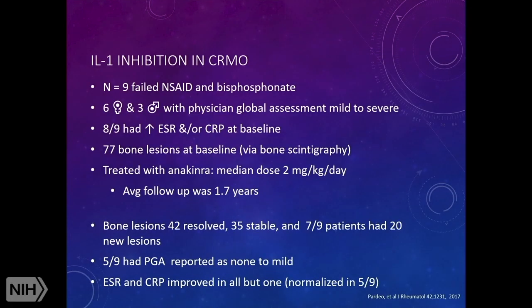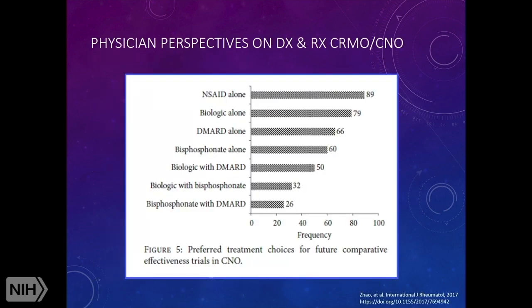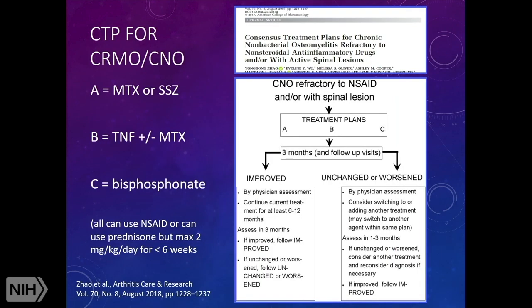There is one study on IL-1 inhibition with anakinra in nine patients, all with inflammatory disease. At baseline there were 77 bone lesions. After an average of 1.7 years of follow-up, 42 lesions resolved, 35 were stable, and 20 new lesions appeared. The physician global improved to none or mild disease in half. CRP and sed rate improved in all but one patient.